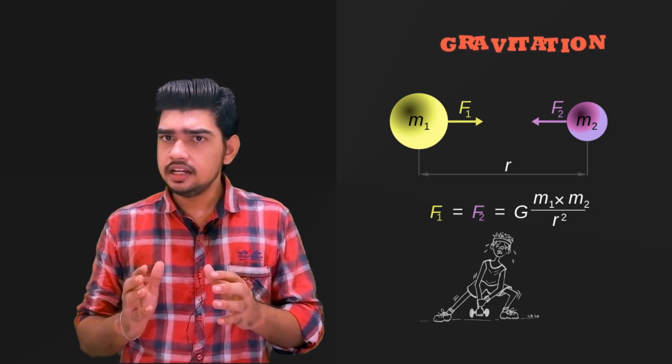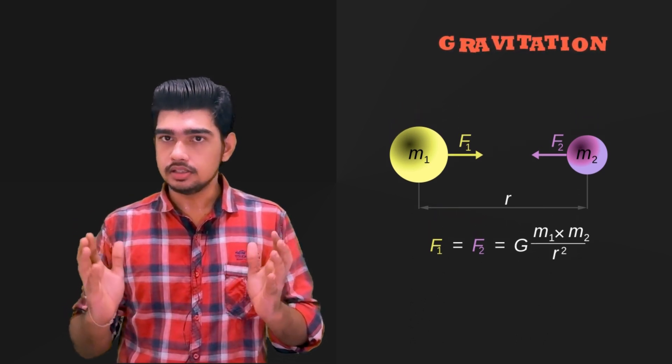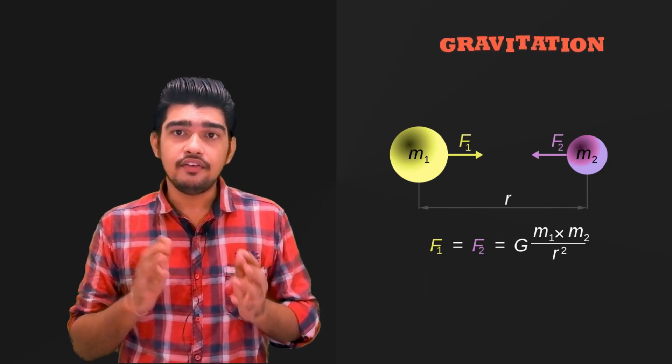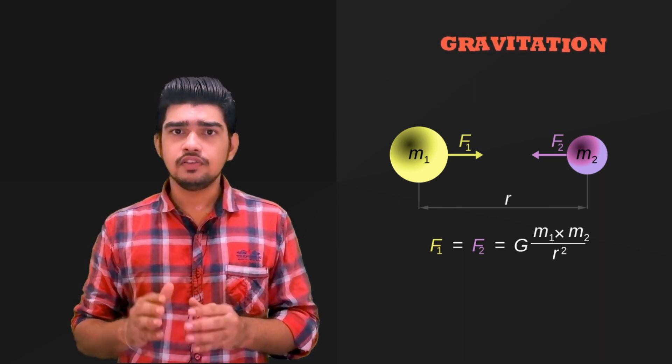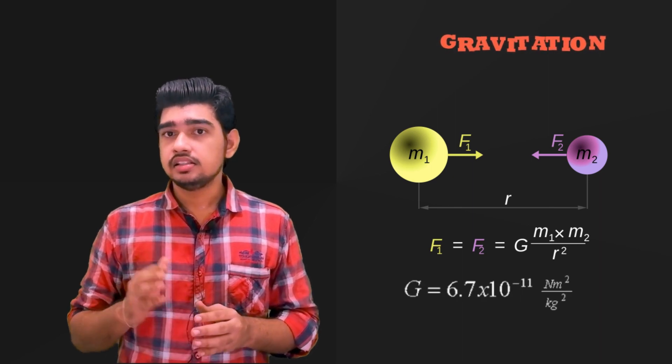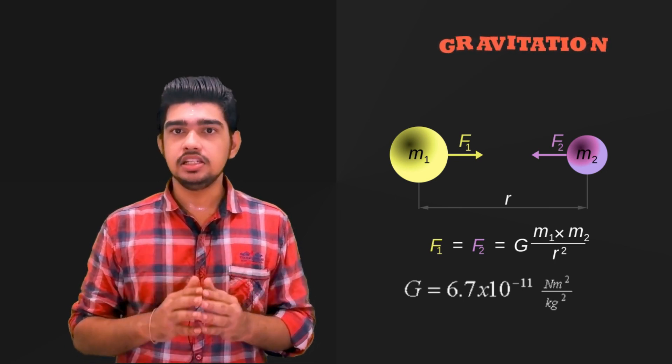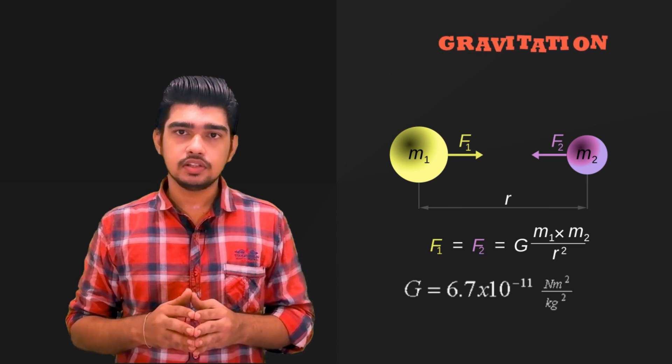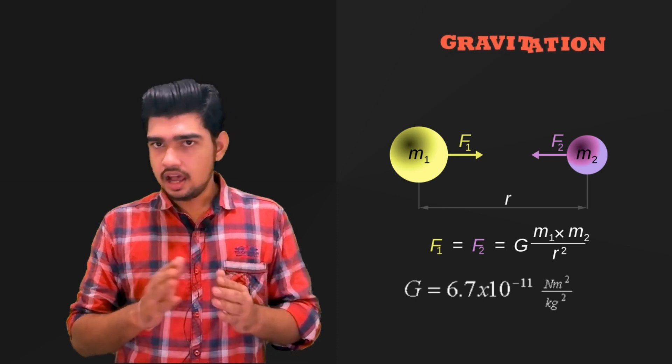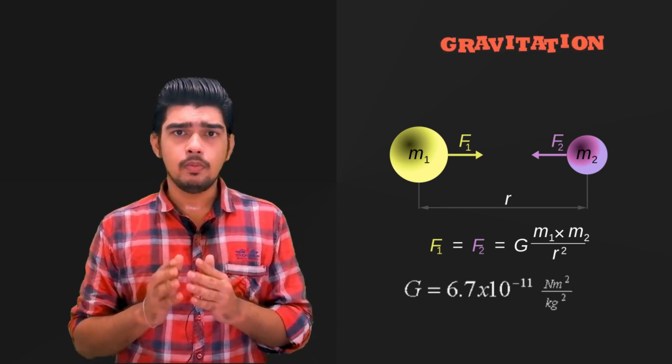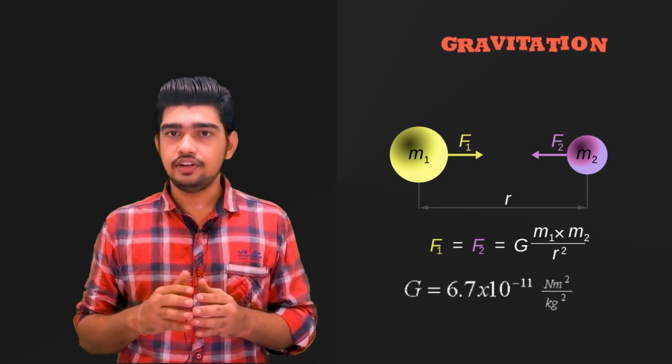But it becomes significant and considerable in all celestial bodies, that is, the big masses. Since the value of gravitational constant G measured in torsion balance by Cavendish was very small, 6.67 times 10 to the power minus 11 Newton meter square per kg, either the mass of the body should be larger to feel the gravitational force.